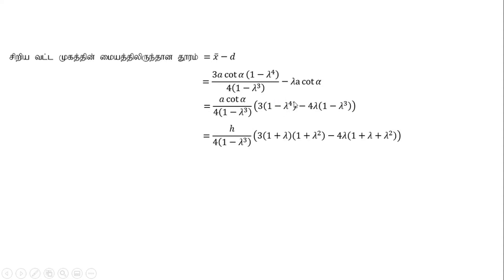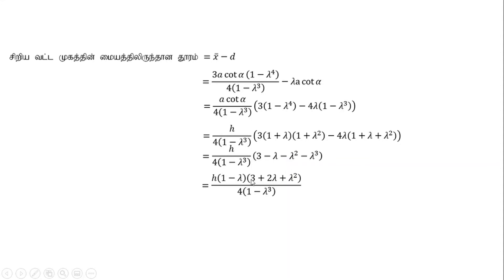So we have 1 minus lambda. We have to add 1 minus lambda: a times cot alpha into 1 minus lambda. We have to add H and substitute H. 1 minus lambda into square. So 1 minus lambda into 1 minus lambda into square equals 1 plus lambda plus lambda squared. Here is the 2 minus lambda into square. So 3 plus 2 lambda plus lambda squared. 1 minus lambda is equal to 4M.